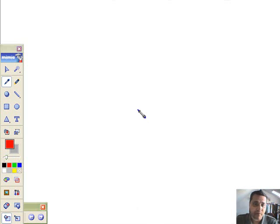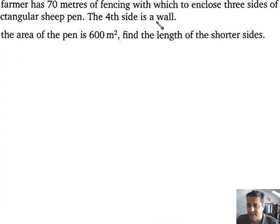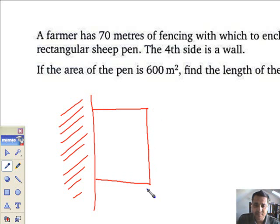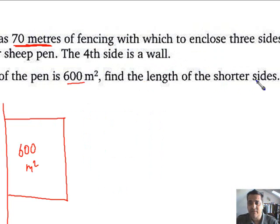Question 11 also involves forming a quadratic. A farmer has 70 metres of fencing with which to enclose 3 sides of a rectangular sheep pen. The fourth side is a wall. This is my wall up against the barn, and his fencing can go like that, like that, and like that. I know this part all comes to 70 metres. And the area of the pen comes to 600 metres squared. The question is, if the area is 600 metres squared, find the length of the shorter sides.